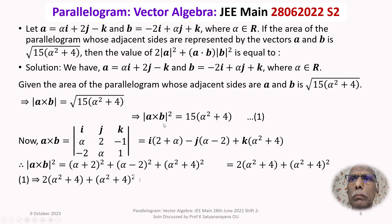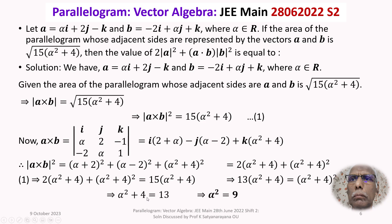Using equation 1, we have 2 times (alpha squared plus 4) plus (alpha squared plus 4) squared equals 15 times (alpha squared plus 4). Simplified, this gives 13 times (alpha squared plus 4) equals (alpha squared plus 4) squared. This implies alpha squared plus 4 equals 13. Cancelling the factor (alpha squared plus 4) from both sides — which is never zero for any real alpha — we get alpha squared equals 9.